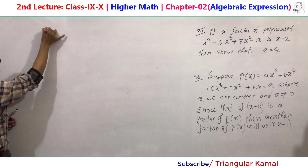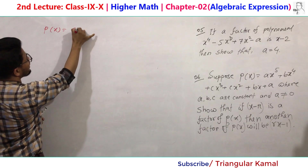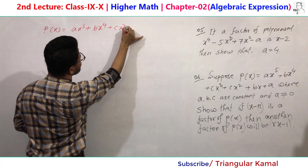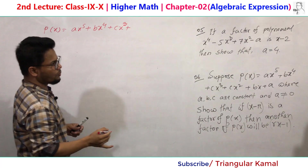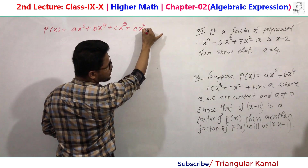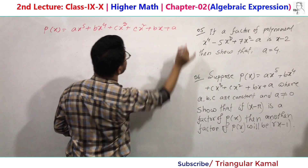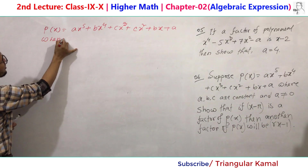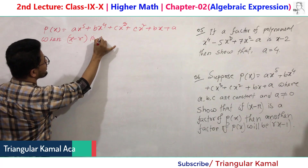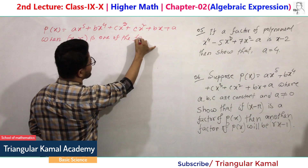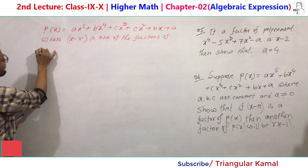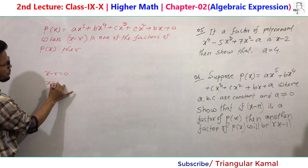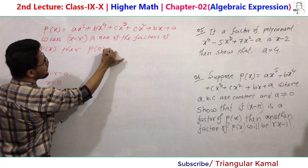Given: p(x) equals ax to the power 5 plus bx to the power 4 plus cx cubed plus cx squared plus bx plus a. When x minus r is one of the factors of p(x), then x minus r equals zero, so x equals r, and therefore p(r) equals 0.